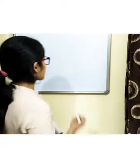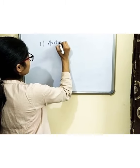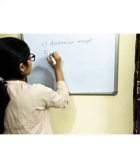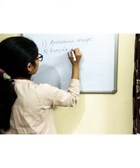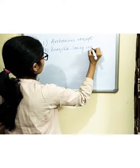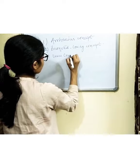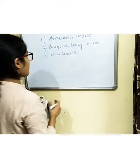Hello students, welcome to Biotech Academy. Today we'll discuss acids, bases, and buffers. In order to categorize any substance as an acid or a base, three different concepts have been proposed, each with their own limitations: the Arrhenius concept, the Bronsted-Lowry concept, and the Lewis concept. We'll discuss all three one by one.